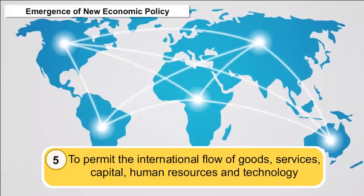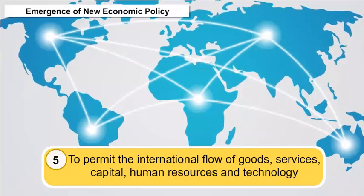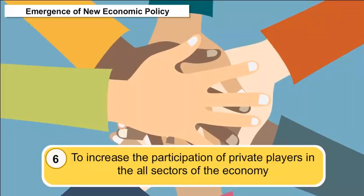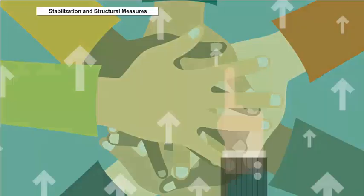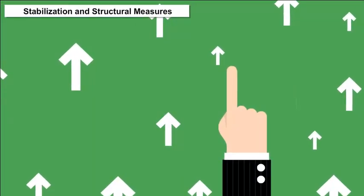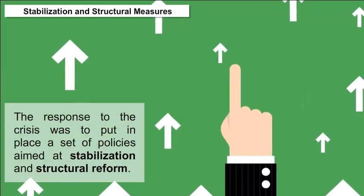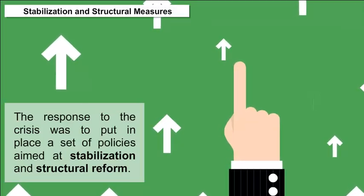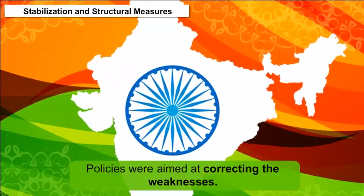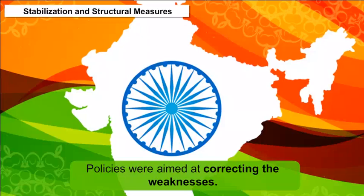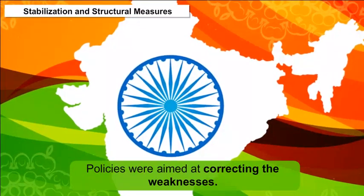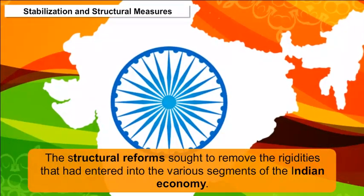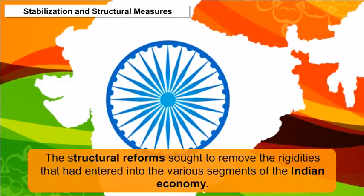6. To increase the participation of private players in all sectors of the economy. Stabilization and Structural Measures: The response to the crisis was to put in place policies aimed at stabilization and structural reform. While stabilization policies aimed at correcting weaknesses on the fiscal and balance of payments fronts, structural reforms sought to remove rigidities that had entered into various segments of the Indian economy.